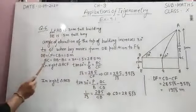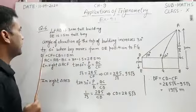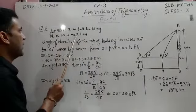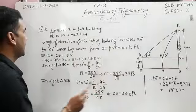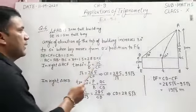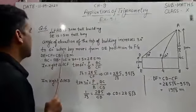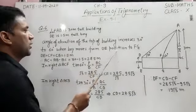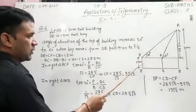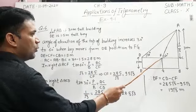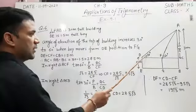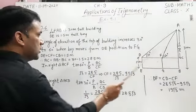Now, AB is 30 meter tall building, DE is 1.5 meter tall boy, and angle of elevation of the top of building increases 30 degrees to 60 when boy moves from DE position to FG. First position of the boy is DE and second position of the boy is FG. The angle of elevation increases from 30 degrees to 60 degrees.